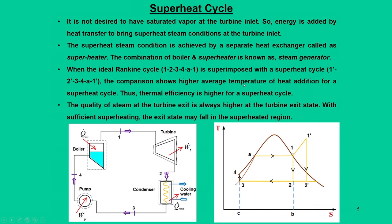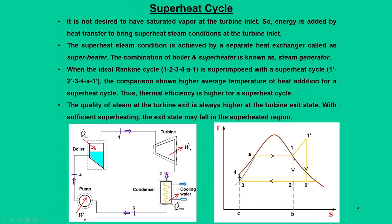Let us first see the first important modification in the Rankine cycle, which is the superheat cycle. We already mentioned that quality of steam at turbine exit should be at least 90 percent. In a conventional cycle operating at states 1, 2, 3, 4a, the steam is at saturated vapor at state 1. Through the superheating process, once we reach state 1 during heating in the boiler from 4 to 1, instead of stopping we keep adding heat to the steam.